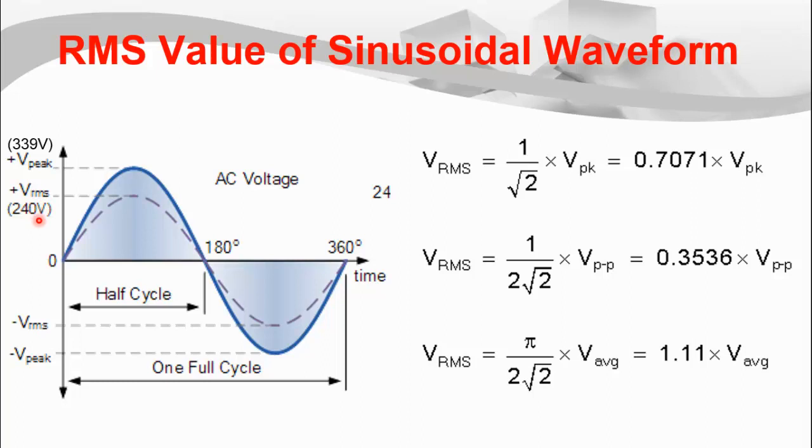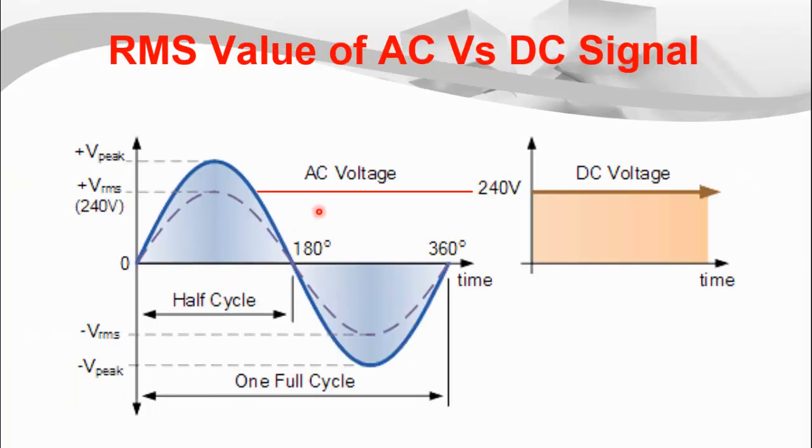Once we have the RMS value which represents the value of the complete sine wave, now I will tell the significance of this RMS value. The RMS value of the AC quantity is equivalent to the DC value. It means that 240 volt RMS AC voltage is equal to 240 volt DC voltage.